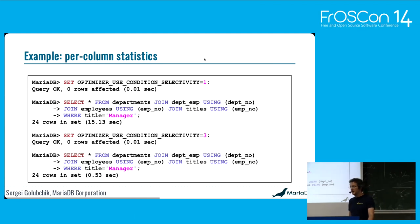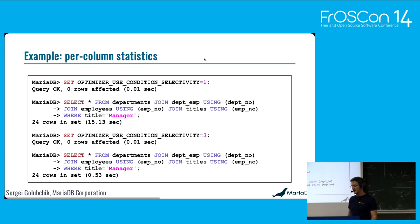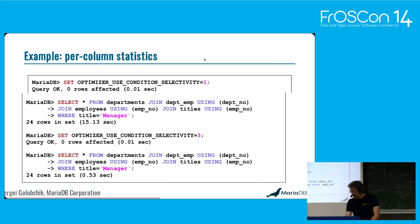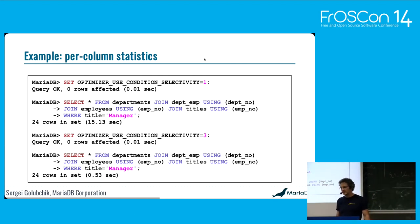The default behavior of optimizer_use_condition_selectivity before MariaDB 10.4 was value 1, meaning do not use engine-independent statistics at all. We run a query showing all managers from all departments — joining the departments table with the employees table, finding everybody where title is 'Manager'. This takes 15 seconds. The column 'title' in the employees table is not indexed, so the optimizer doesn't really know what to do — it needs to do a full table scan.